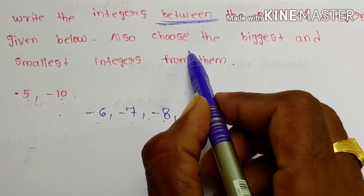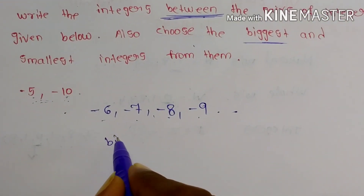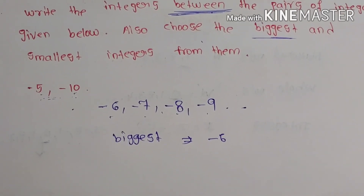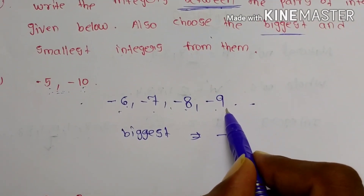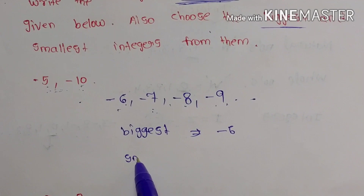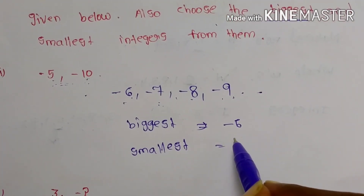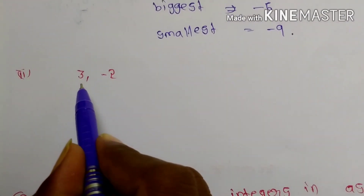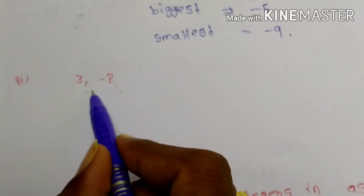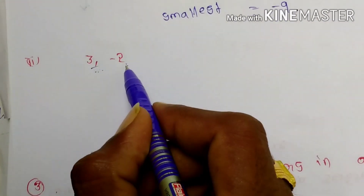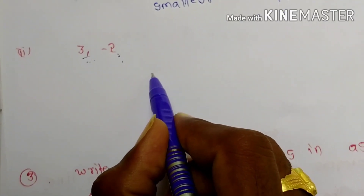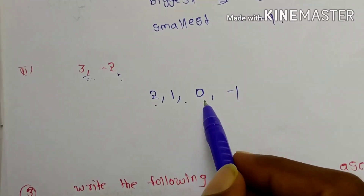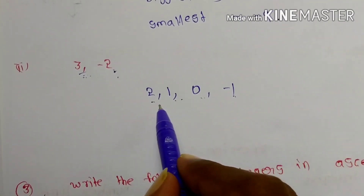From minus 6, minus 7, minus 8, minus 9 — the biggest value is minus 6. Why? Because in negative integers, the smallest-looking number is the biggest value. The smallest integer is minus 9. Next pair: 3 and minus 2. The integers between 3 and minus 2 are 2, 1, 0, minus 1.